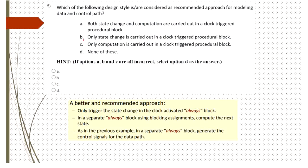The next question asks which design style is considered the recommended approach for modeling data path and control path. By using a clock-triggered procedural block, we change the state. That's why B is the correct answer.